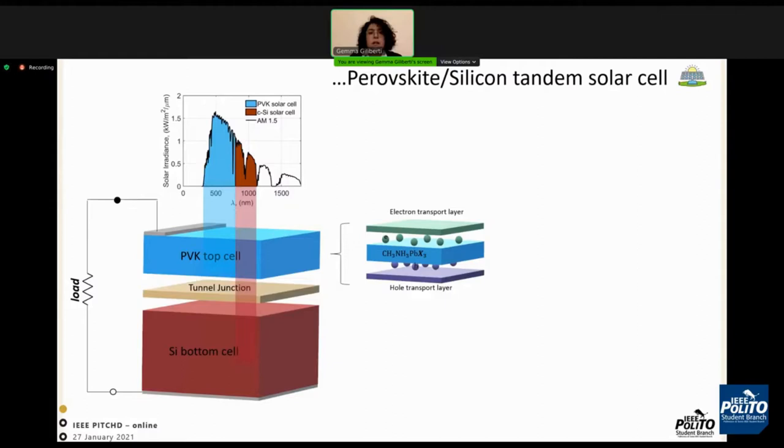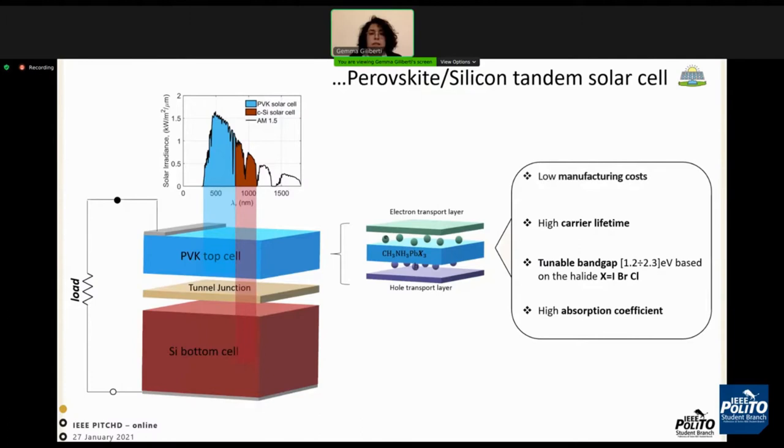The perovskite material is recently used for solar cells and can be considered a hybrid organic-inorganic material. It is an intrinsic material where electron and hole transport is allowed by the electron transport layer and hole transport layer respectively. The main features are low manufacturing costs, high carrier lifetime, and tunable band gap depending on the halide used.